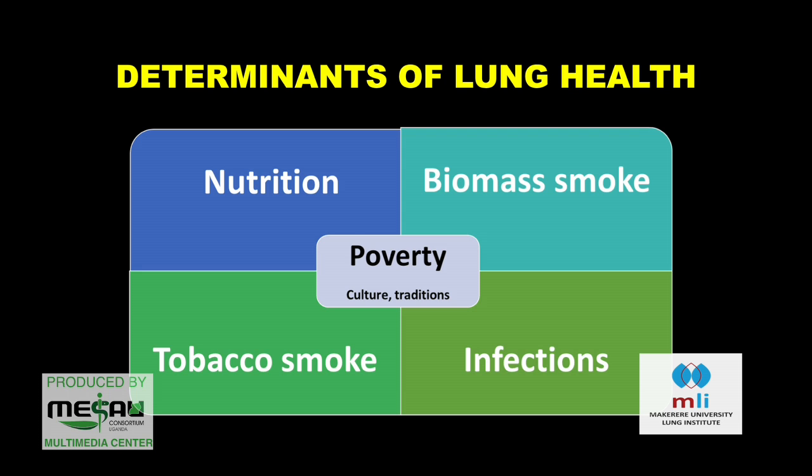Poverty defines your socioeconomic status. It will define whether you use charcoal or firewood which is not well-dried, or a clean stove, or gas. That will also determine whether you have milk or black tea. It will determine the incidence of infections. So most of the lung health problems we see have poverty underlying them. But in our context, I also wanted to bring up culture, especially for pregnant mothers — there are some cultures where certain foods are prohibited during pregnancy, impacting on the lung health of your babies.